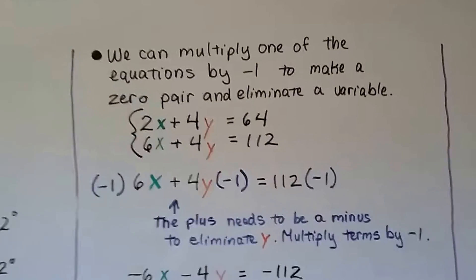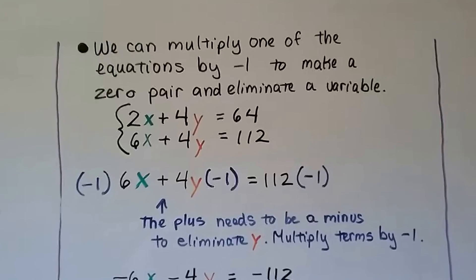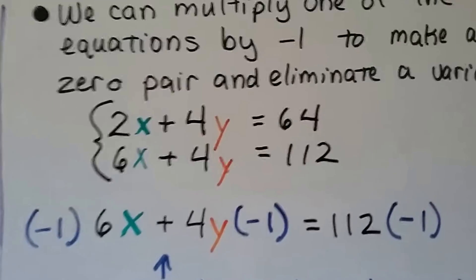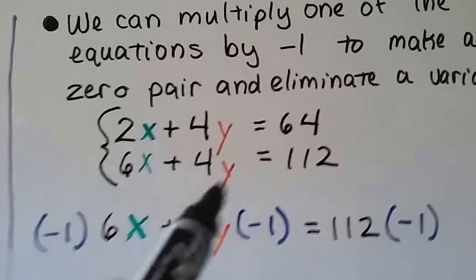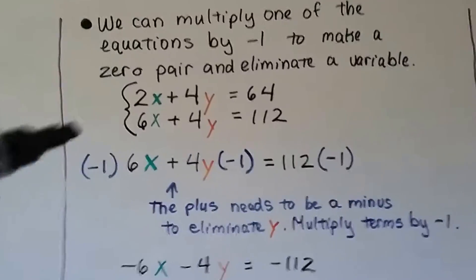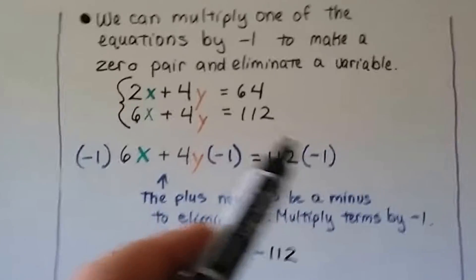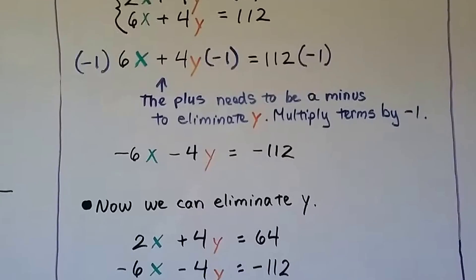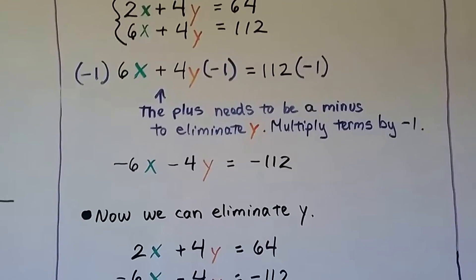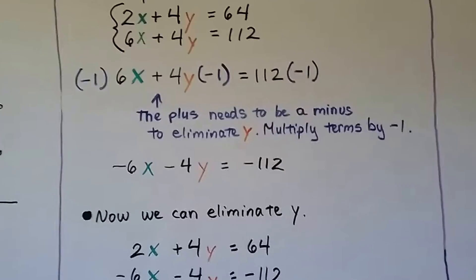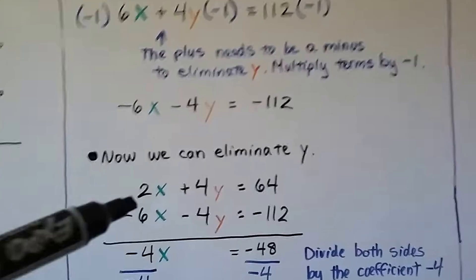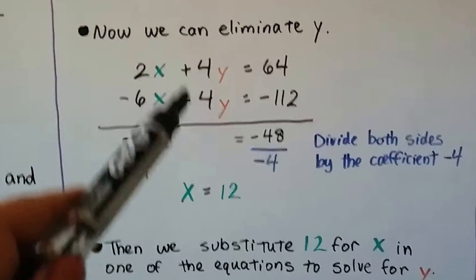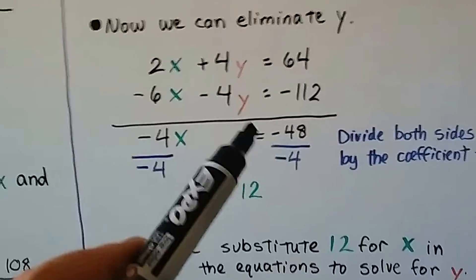And we can multiply one of the equations by negative 1 to make a zero pair and eliminate a variable. So in this system, you can see we've got plus 4y and plus 4y. And wouldn't it be perfect if that was a negative and then we would just have a zero pair here? Well, if we multiply each term of this second equation by a negative 1, we multiply every single term. Because that plus needs to be a minus to eliminate the y. We would end up with negative 6x minus 4y equals negative 112. Now we can take the first equation and this new second equation, stack them, and we can eliminate the y. Because now we have a positive 4y and a negative 4y. That makes a zero pair. That leaves us with a negative 4x equals negative 48.